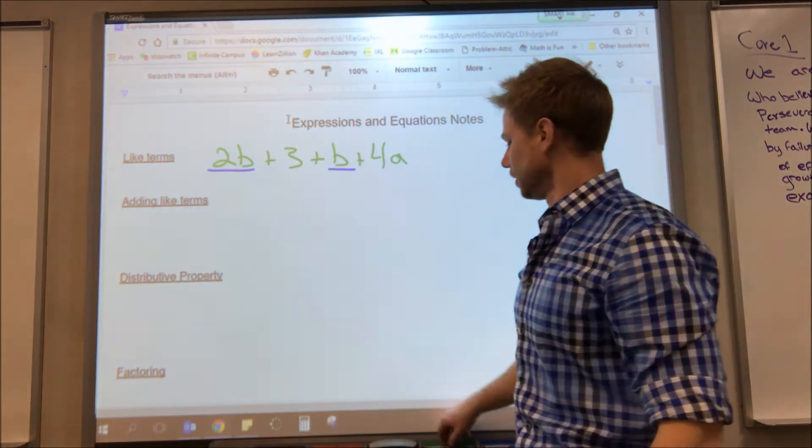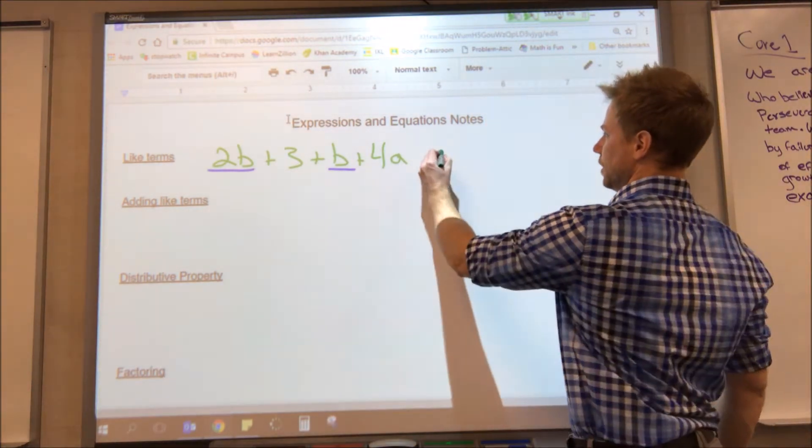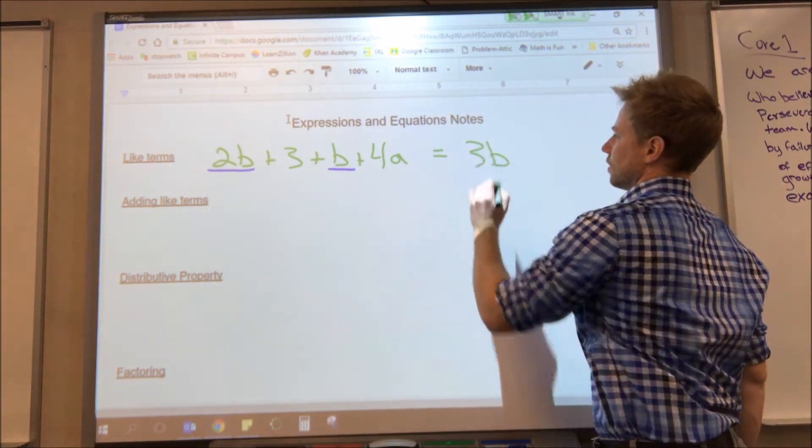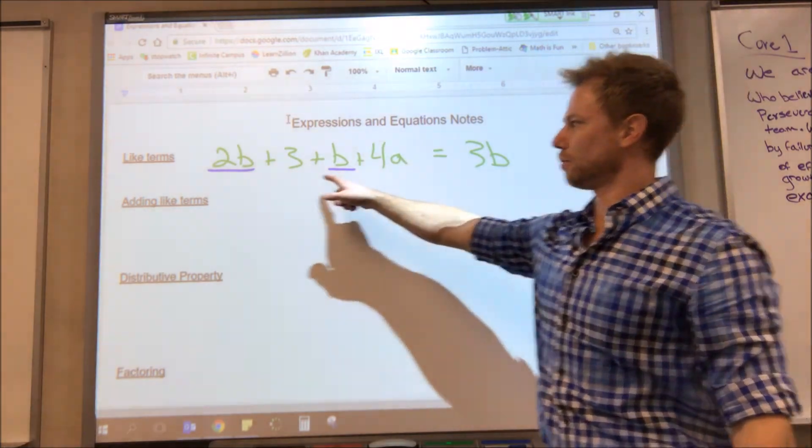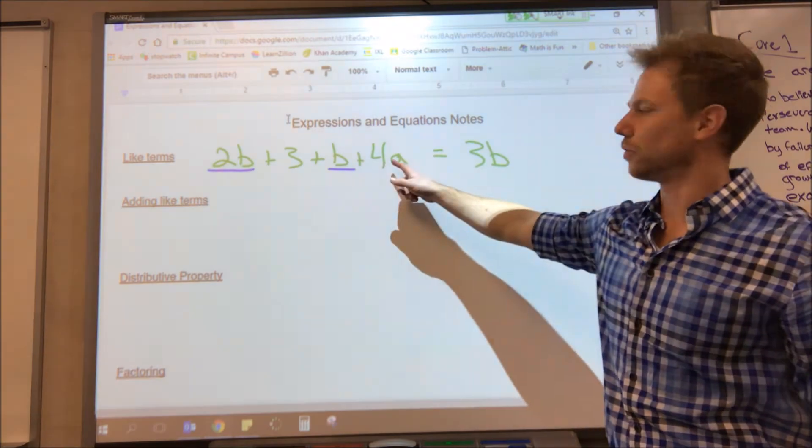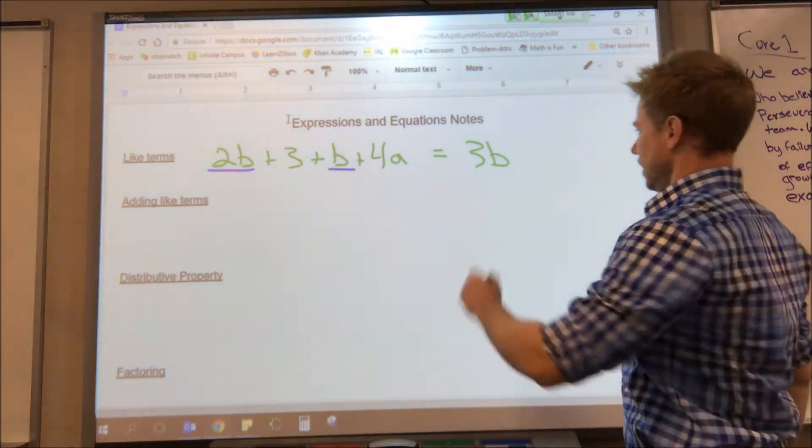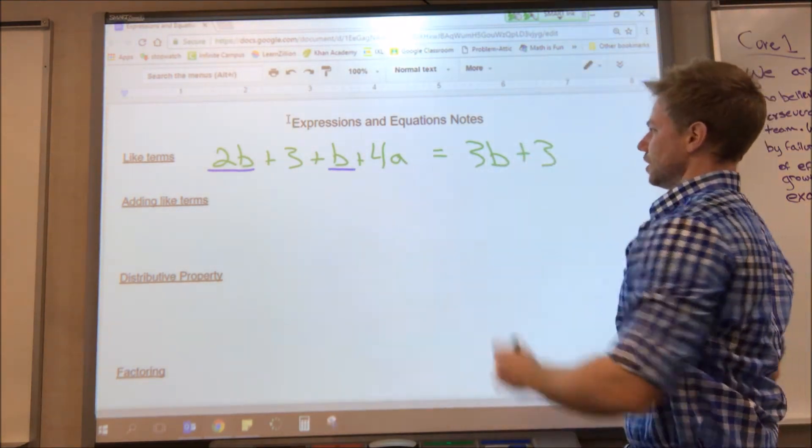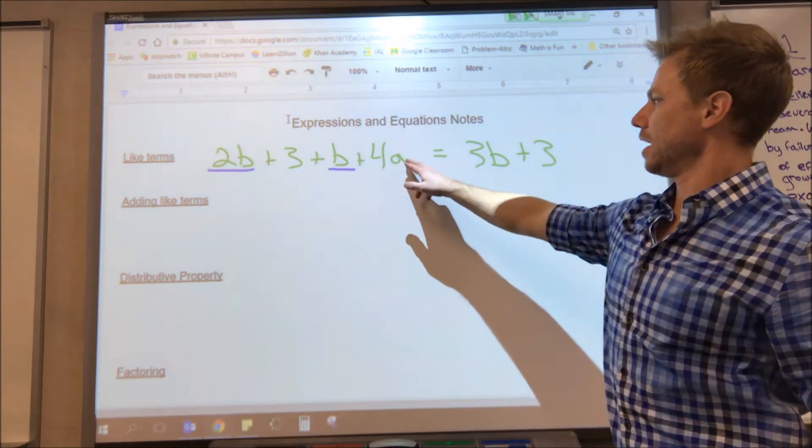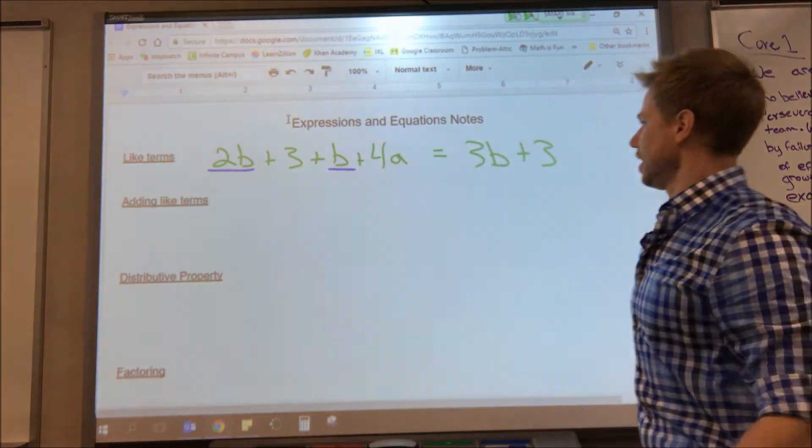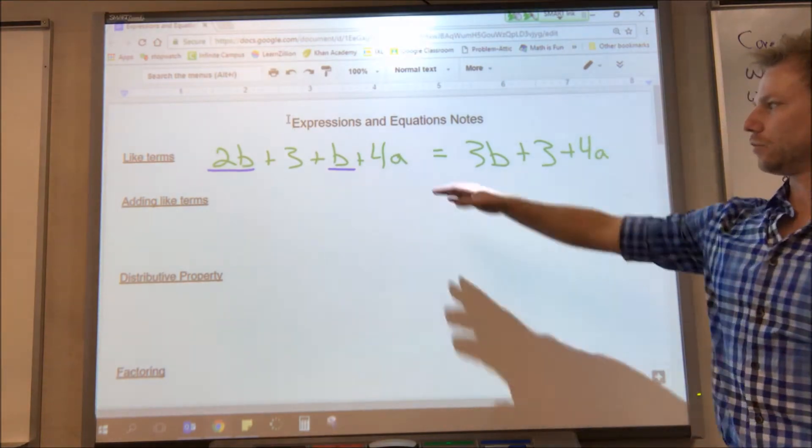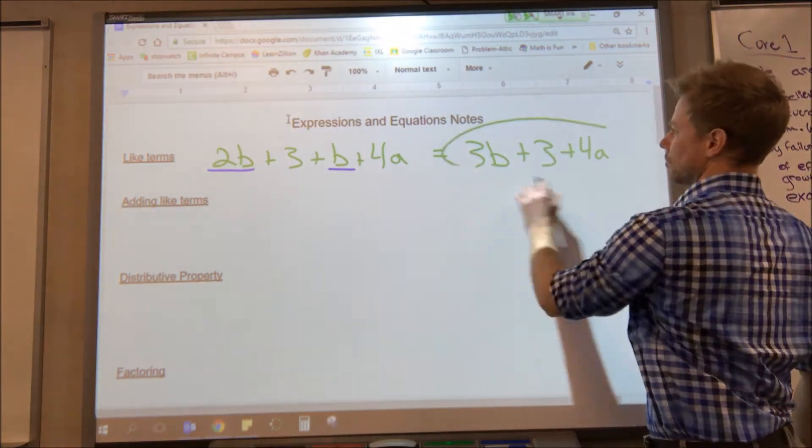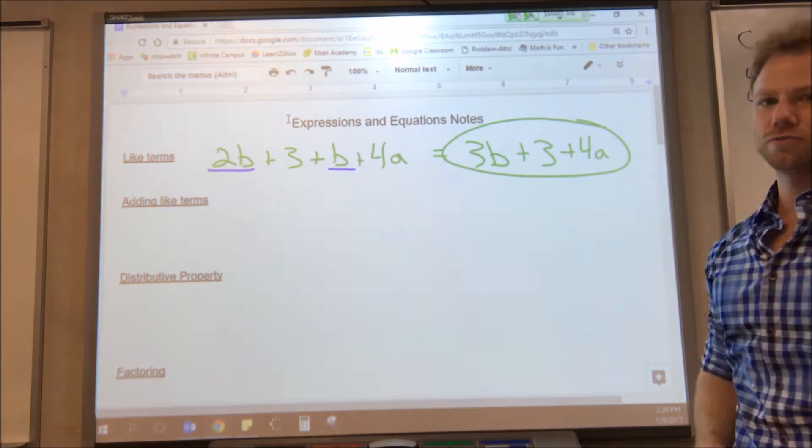So 2b plus 1b would be 3b, or 3 right here. There's no other term that is just a number without a letter, so I can't add anything to that, so that would just stay 3. And 4a, there's no other term that has an a, so I can't add anything to that either. So that would simplify to 3b plus 3 plus 4a.